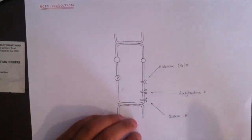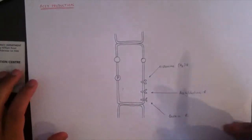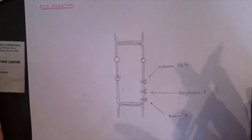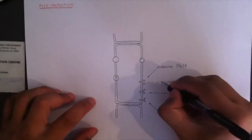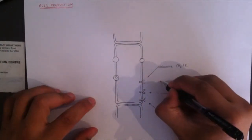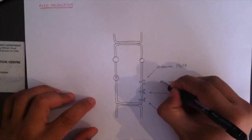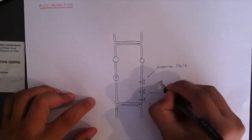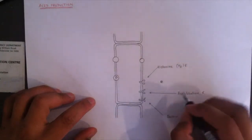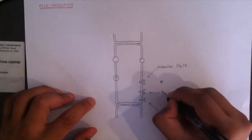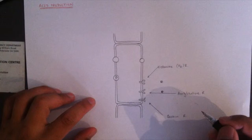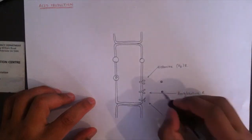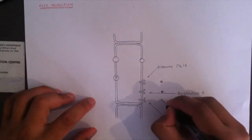Acid production all starts with the binding of — so this is histamine, it goes and binds to the histamine H2 receptors. And this is the acetylcholine, which binds to the acetylcholine receptor.